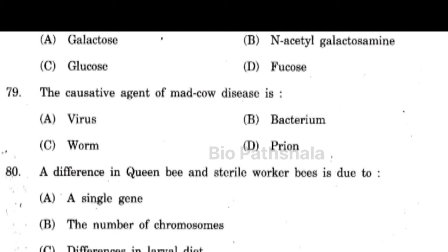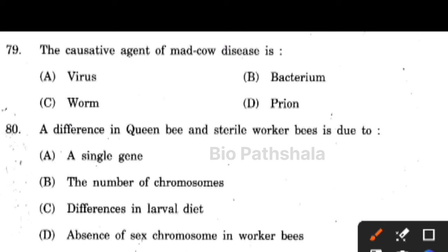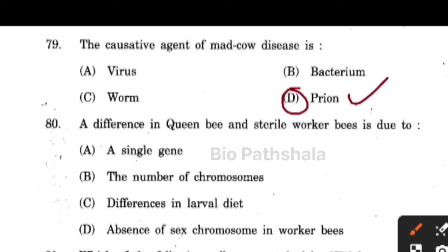Next question: the causative agent of mad cow disease is a prion. These are misfolded proteins that cause the disease, also known as bovine spongiform encephalopathy.